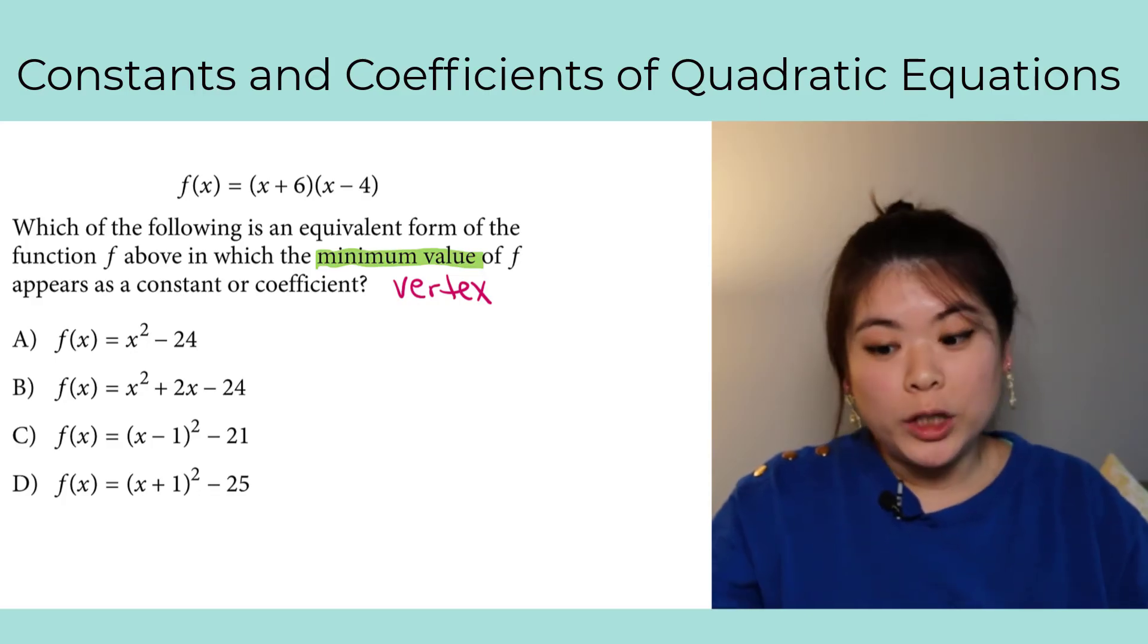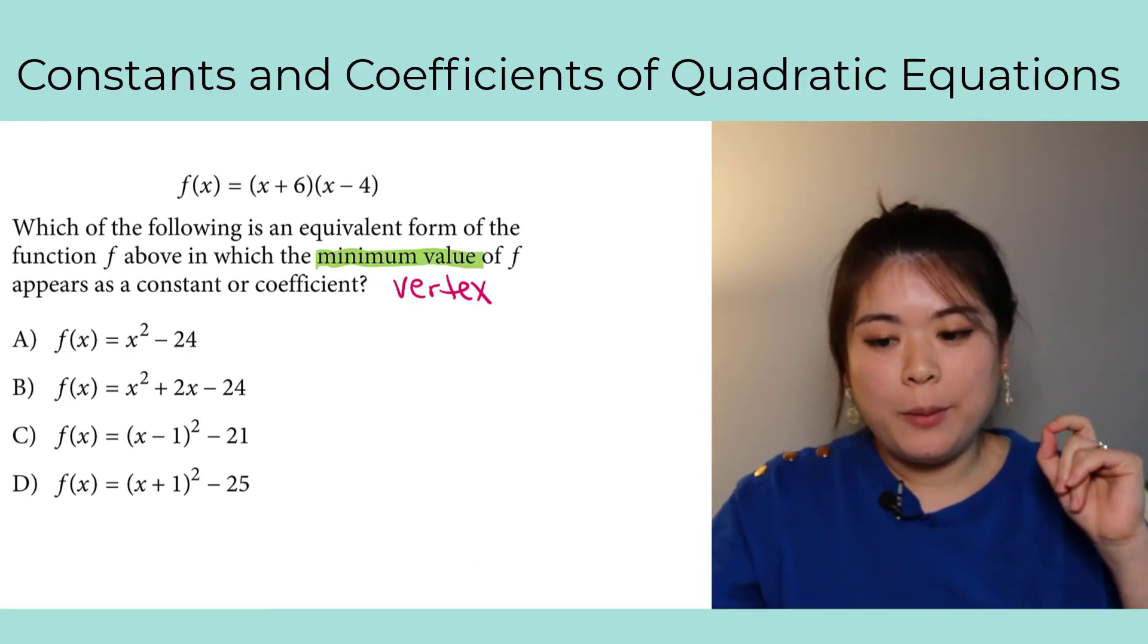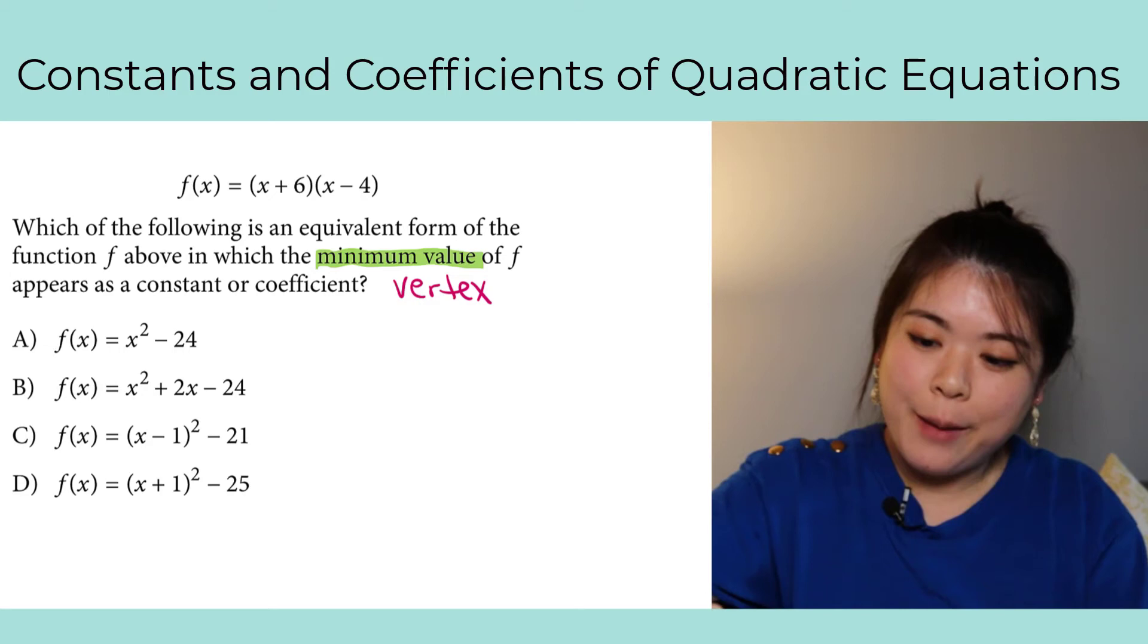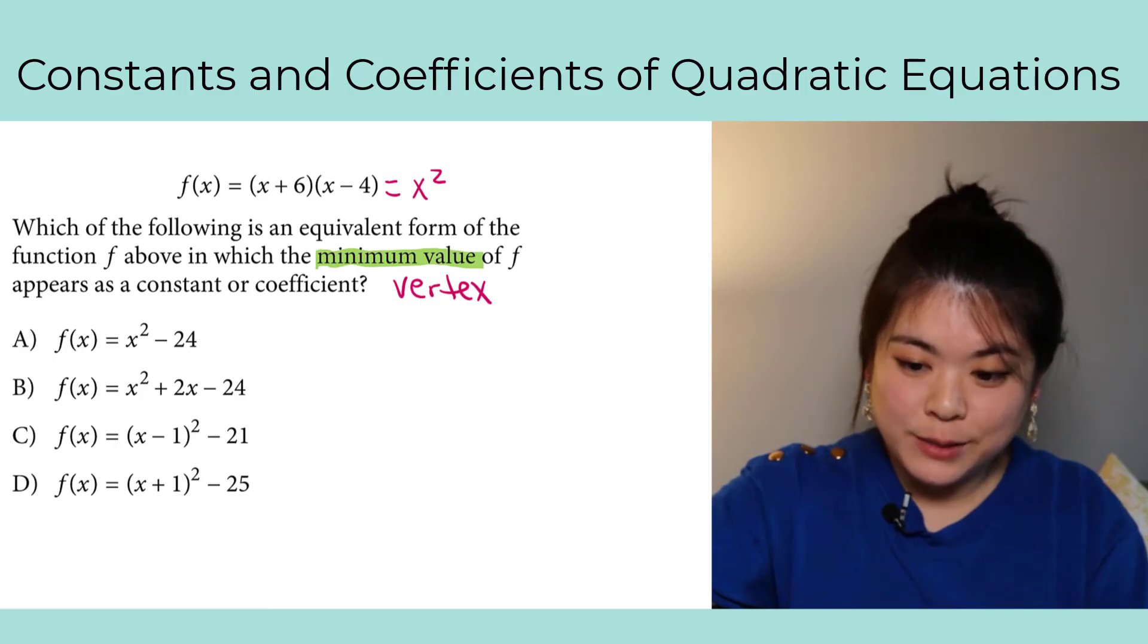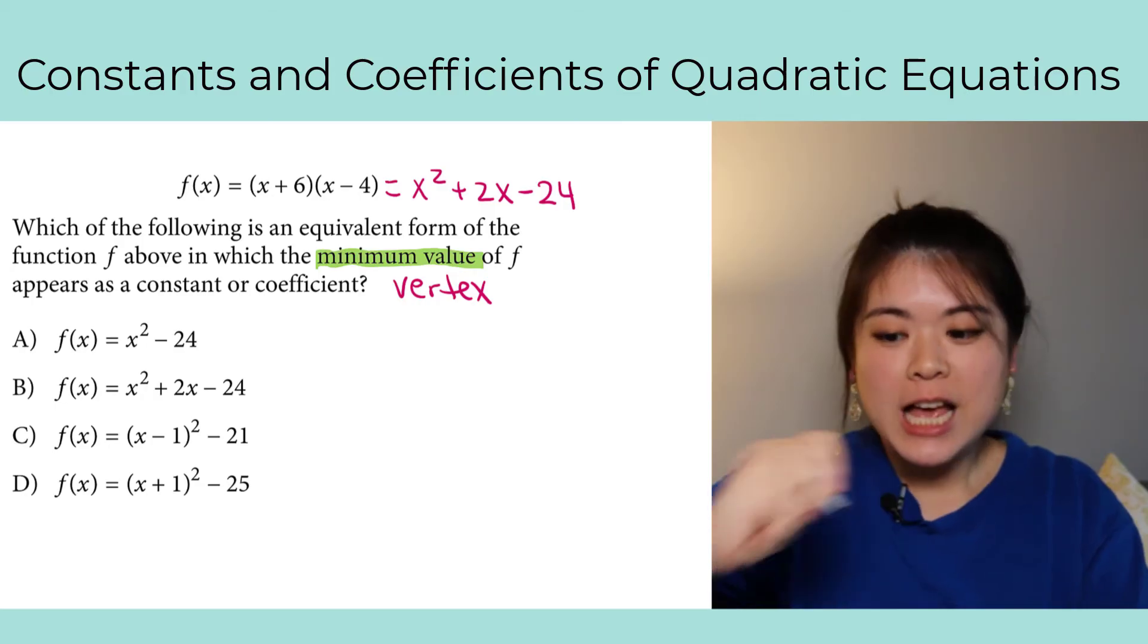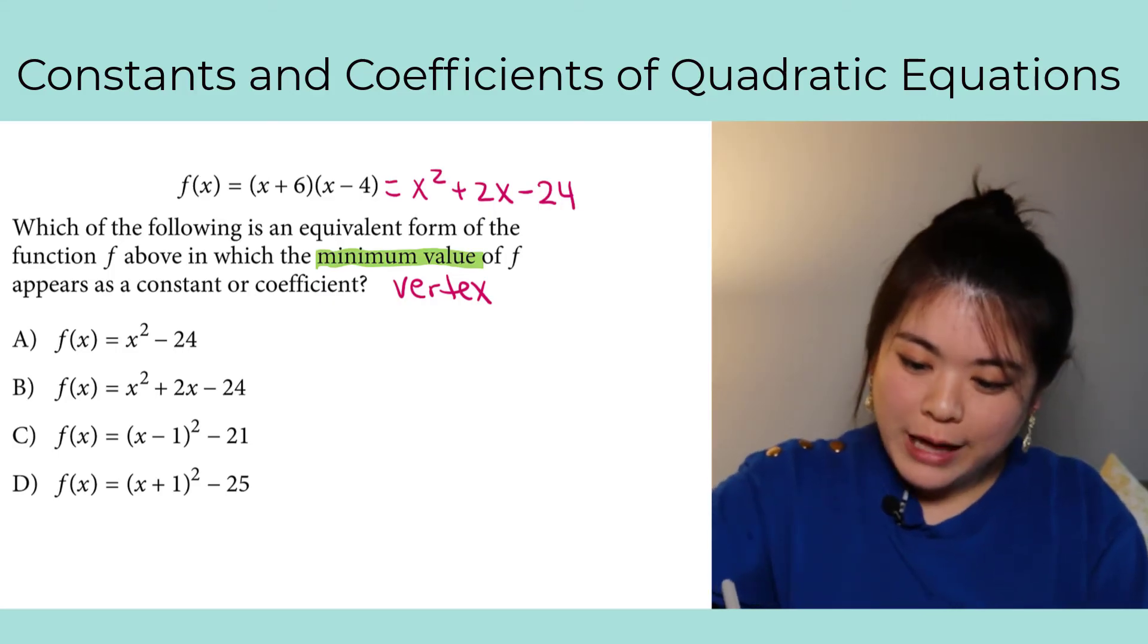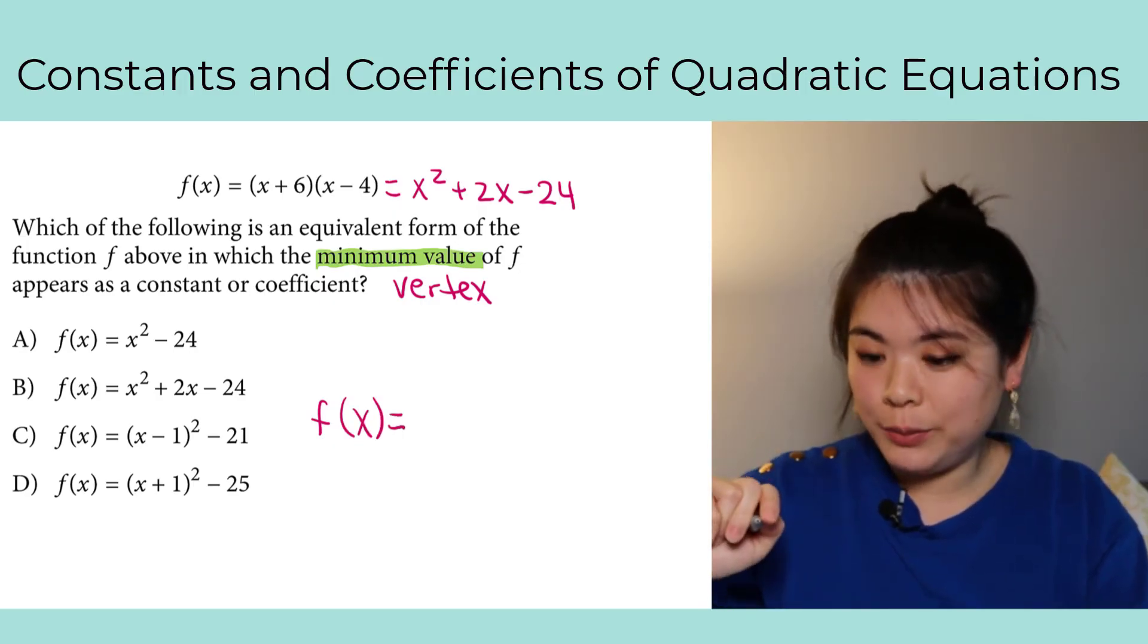So you actually have to do a little bit of manipulation in order to get yourself to the right answer. We start, in this case we're starting from the factored form, and I need to go to the vertex form. So I have to first go through standard form, and I do that by foiling this out. If I foil this out, I'll get x squared minus 4x plus 6x, that's plus 2x, minus 24. So that is my standard form. Now in order to convert from standard to vertex, I have to do something called completing the square.